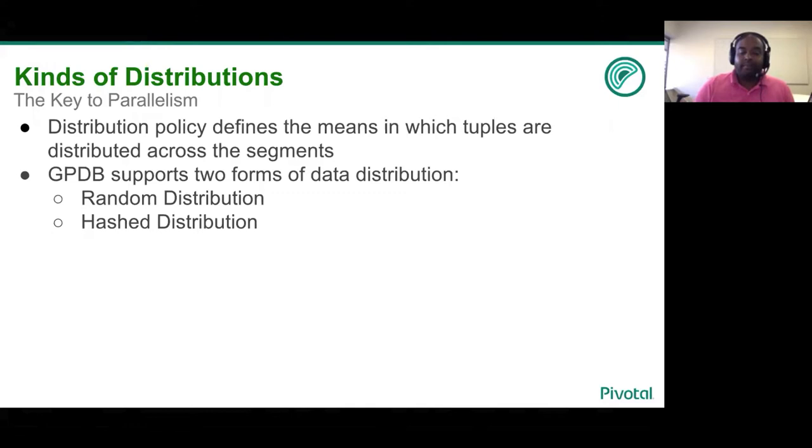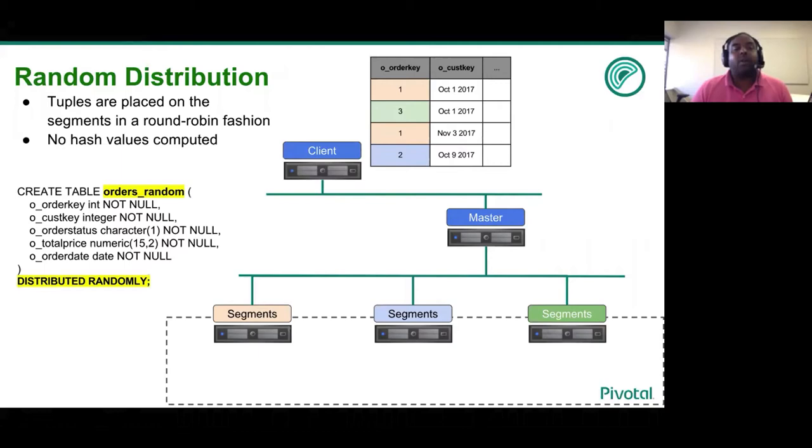So let's start off with a simple distribution policy called random distribution policy. A user can specify a table to be distributed in a random fashion by the distributed randomly clause in the create table SQL command.